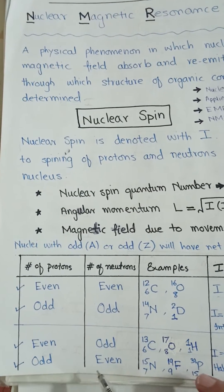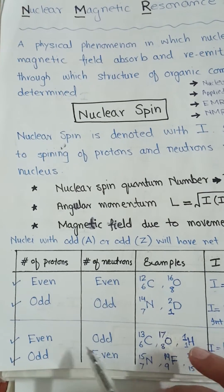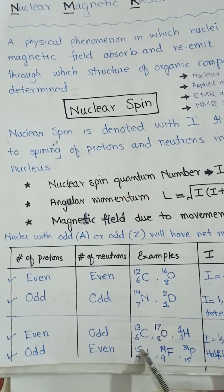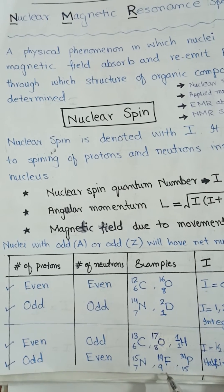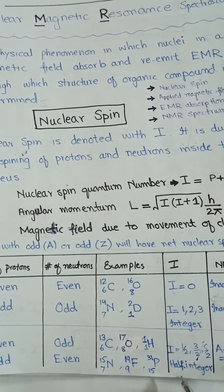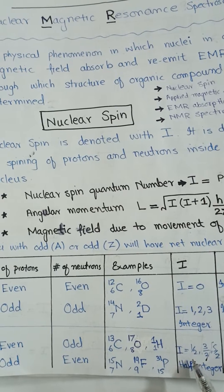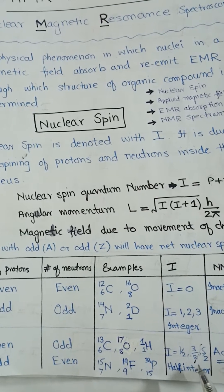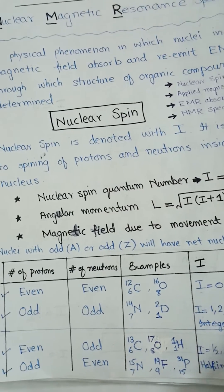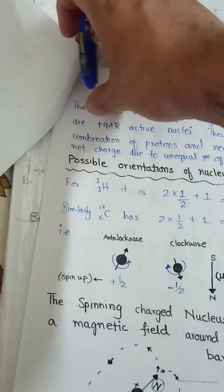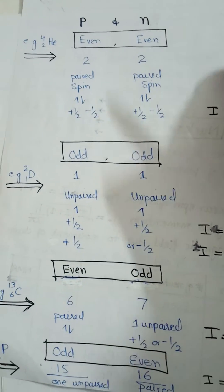Similarly, when we have an odd number of protons and an even number of neutrons — for example, nitrogen-15 (an isotope of nitrogen-14), fluorine-19, and phosphorus-31 — all of these even-odd combinations give half-integer nuclear spin quantum numbers and produce NMR active signals. So even-odd combinations of protons and neutrons provide active NMR signals for these elements.